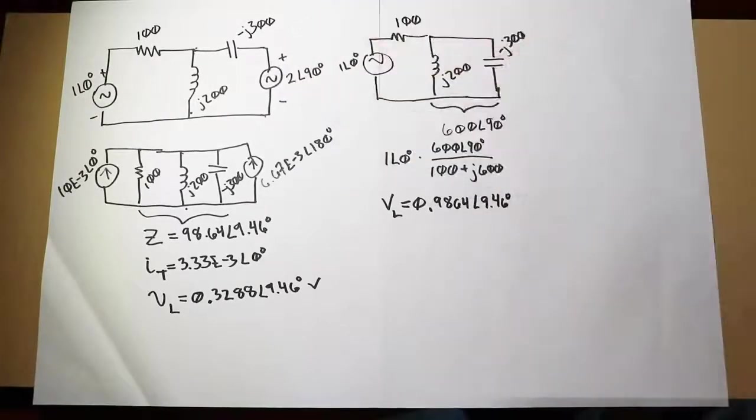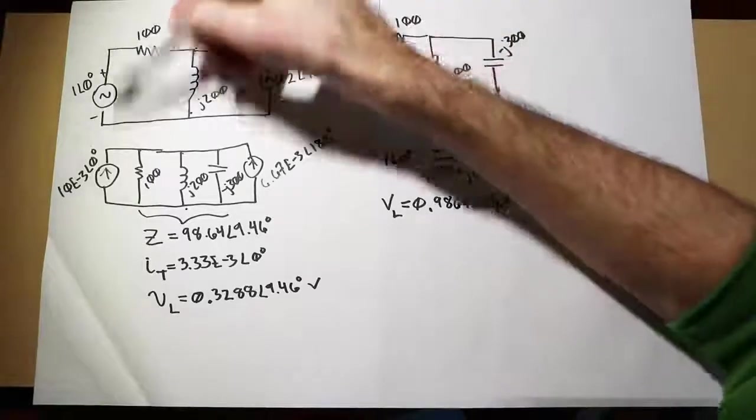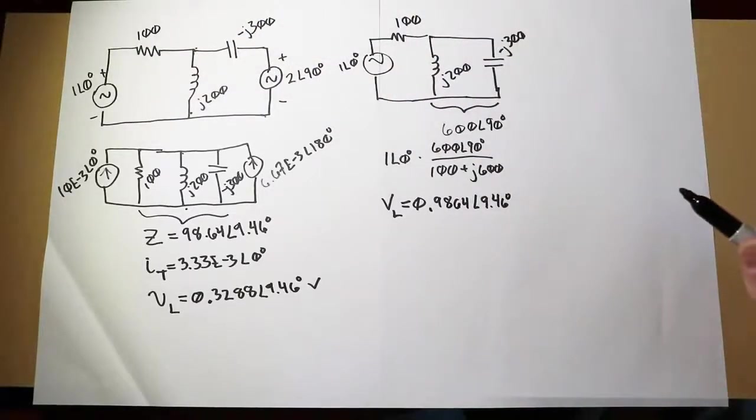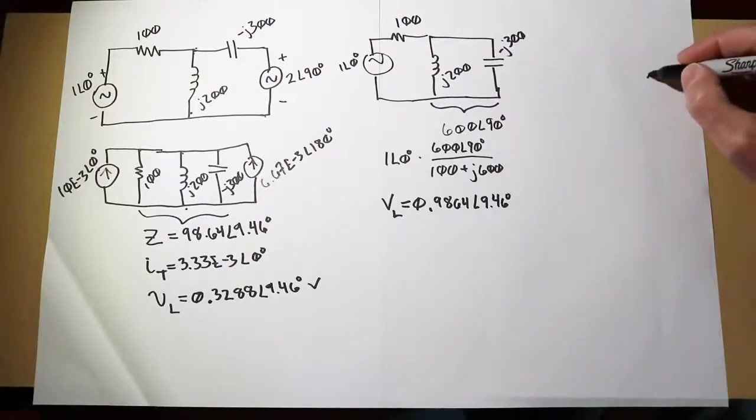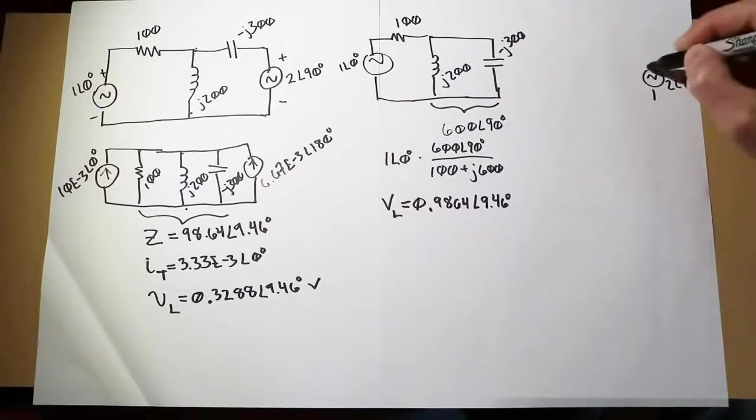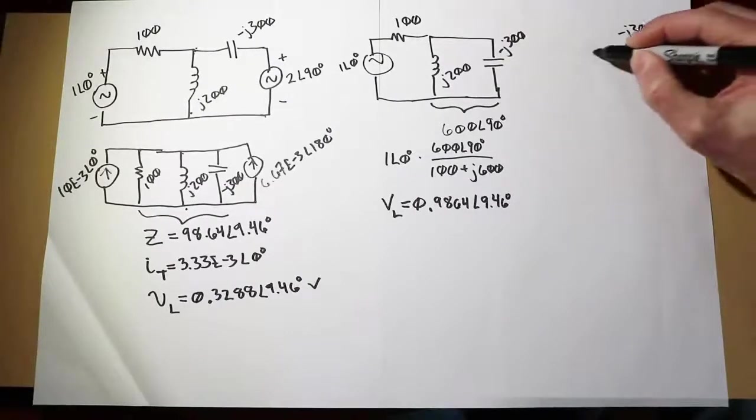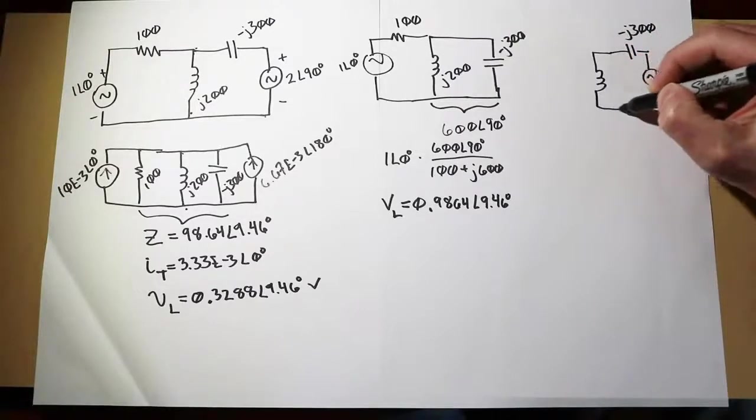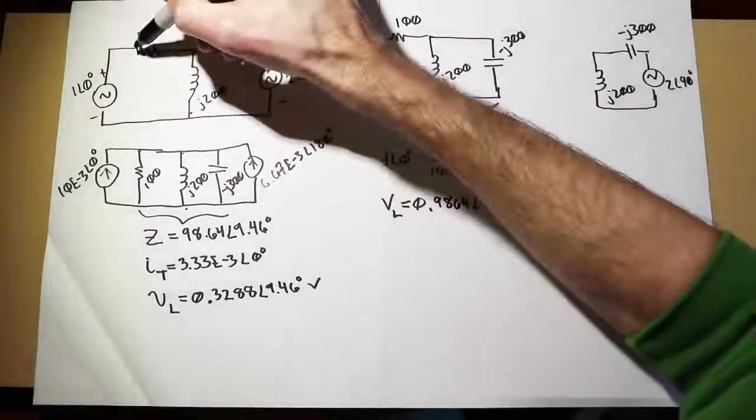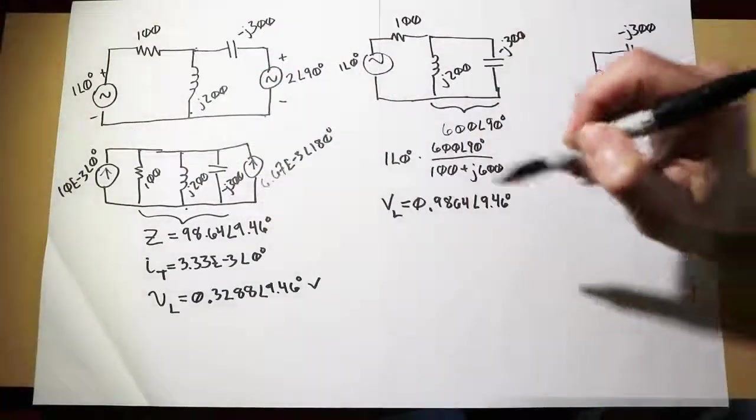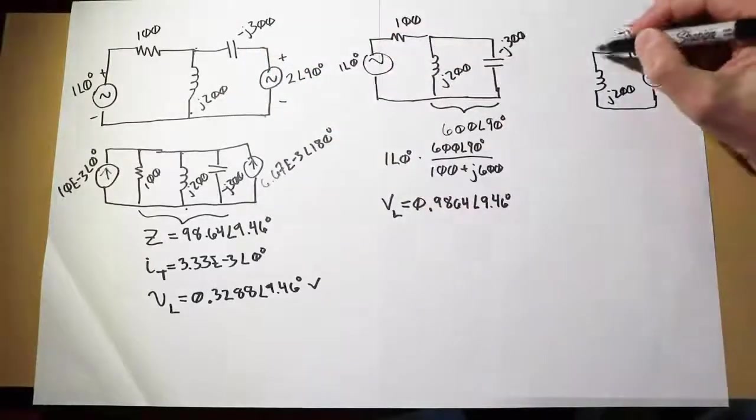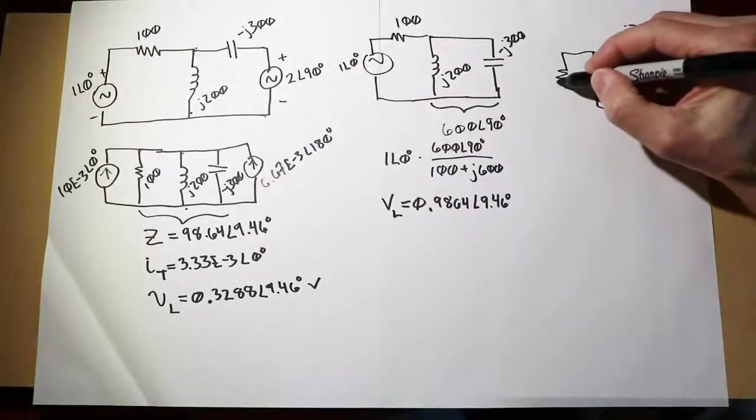Now we turn to the second source. We do the same thing. We short the first source, redraw the circuit, see what we get. Here we have our 2 volt source at an angle of 90. That's going to feed into the capacitor. The inductor's coming down like so. Finally, we short this voltage source, which takes this end of the resistor and brings that down to our common point, in other words, in parallel with the inductor.